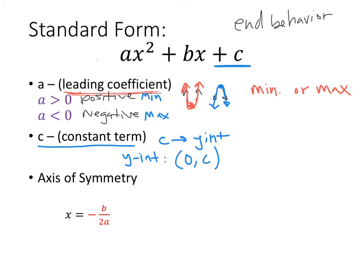From standard form we can also find our axis of symmetry, which is a little more tricky. We use the formula x = -b / 2a. The axis of symmetry is a straight vertical line that goes through the vertex. We look at the b and a coefficients, multiply a by 2, then take the opposite sign. If dividing gives a negative, make it positive; if positive, make it negative.